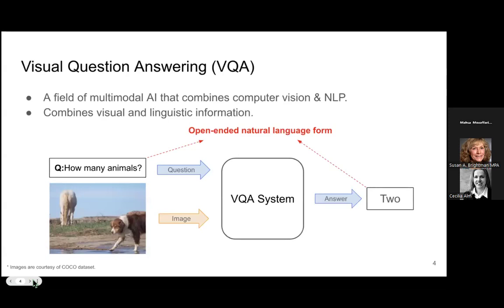VQA is a subfield of multimodal AI, specifically vision-language models that combine computer vision and natural language processing to integrate visual and linguistic information. Given an image and a question in natural language form, the VQA system is supposed to provide an answer considering the image. This open-ended natural language form allows the system to perform more human-like functions than traditional computer vision tasks such as image classification or image segmentation.